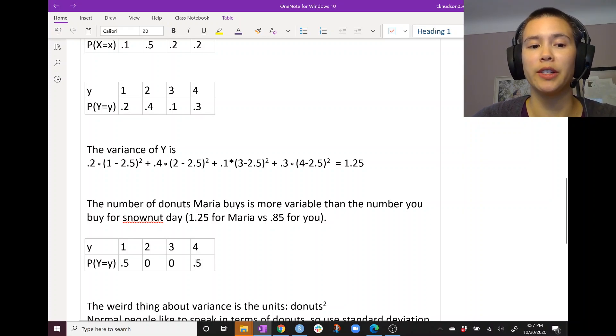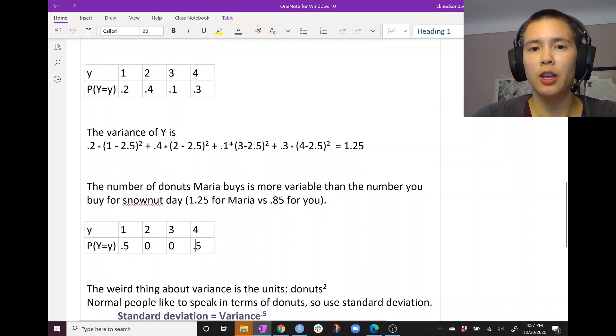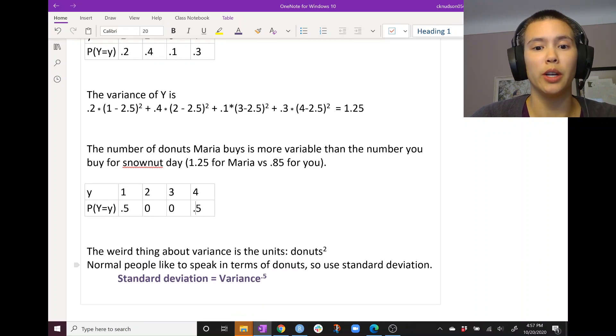Okay, so that's variance for you. It measures the variability of your random variable. A weird thing about variance is the units. So in our donut example, our units would be donuts squared for the variance, and that is just a pretty weird concept. It makes a lot more sense to speak in terms of just plain old donuts. So what we can do is use standard deviation instead of variance.